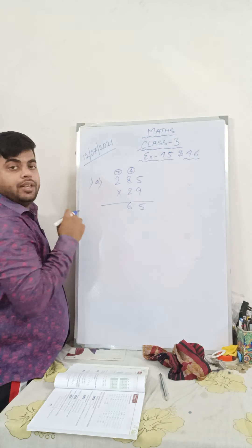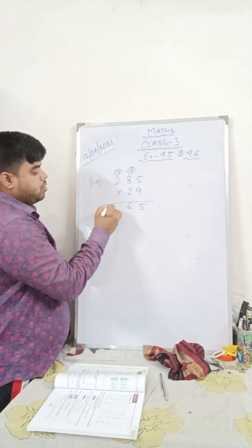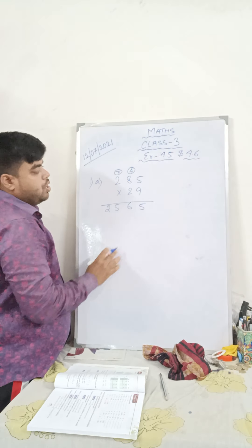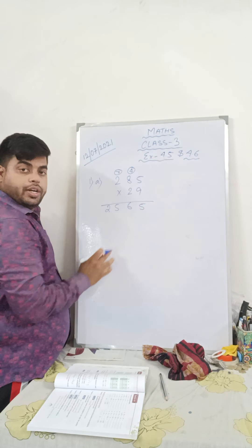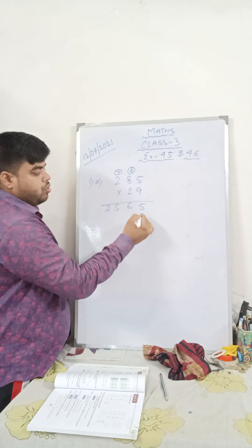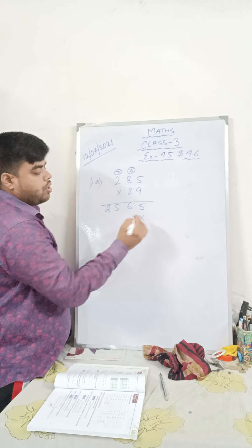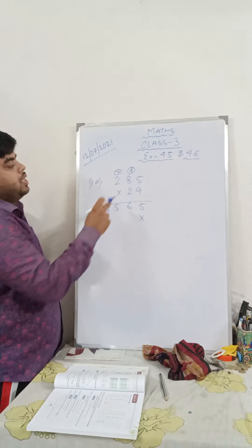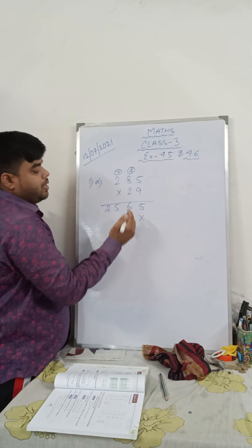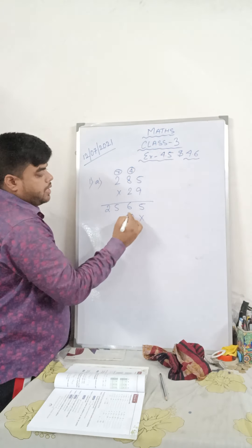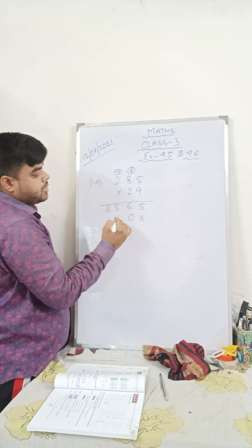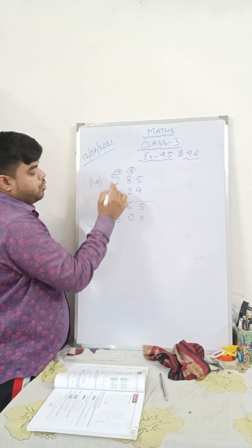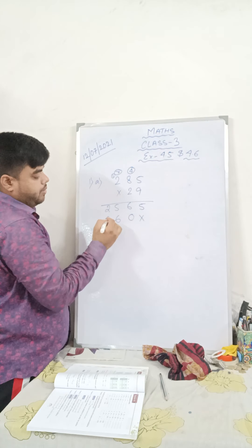The multiplication of the first digit is done. You will put a cross here or you can put 0. Now: 2 fives are 10, 2 eights are 16, 1 in hand. 2 twos are 4 plus 1 is 5.